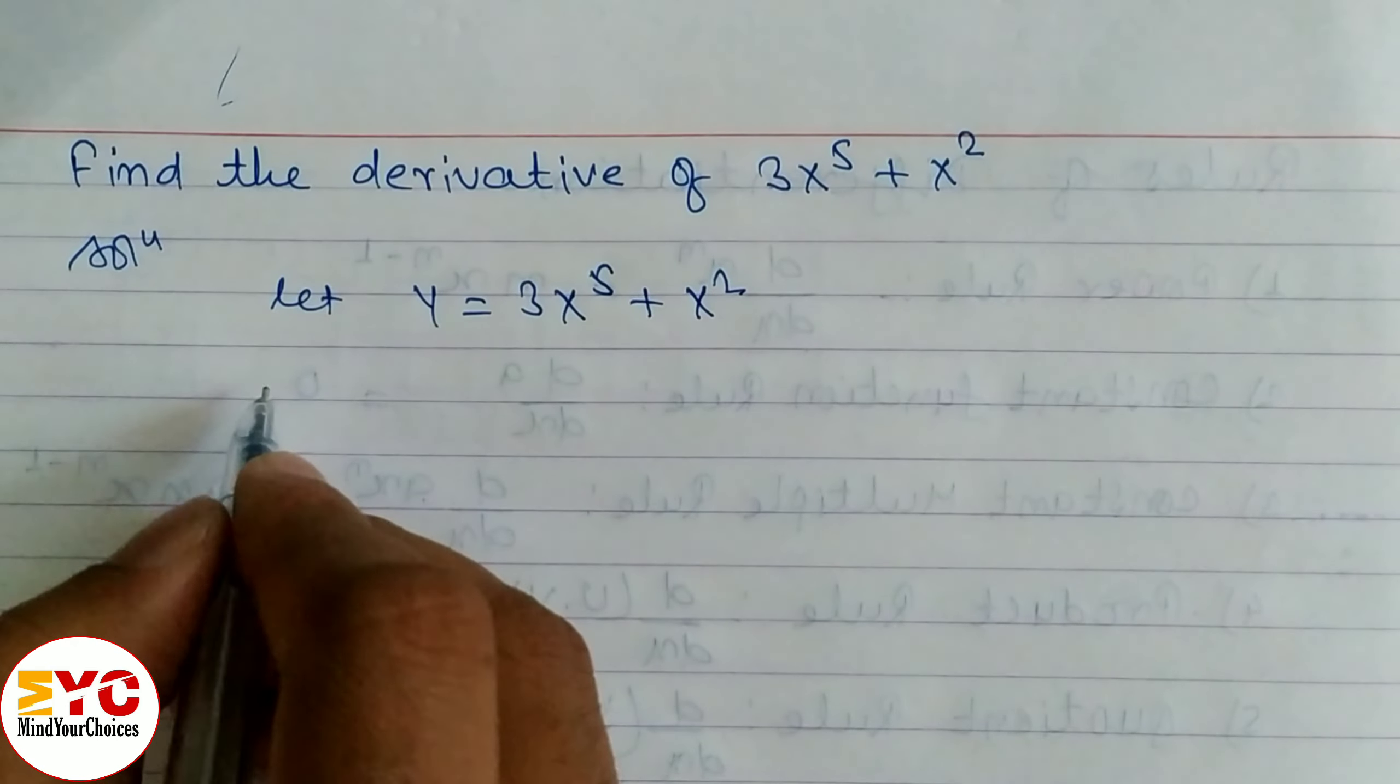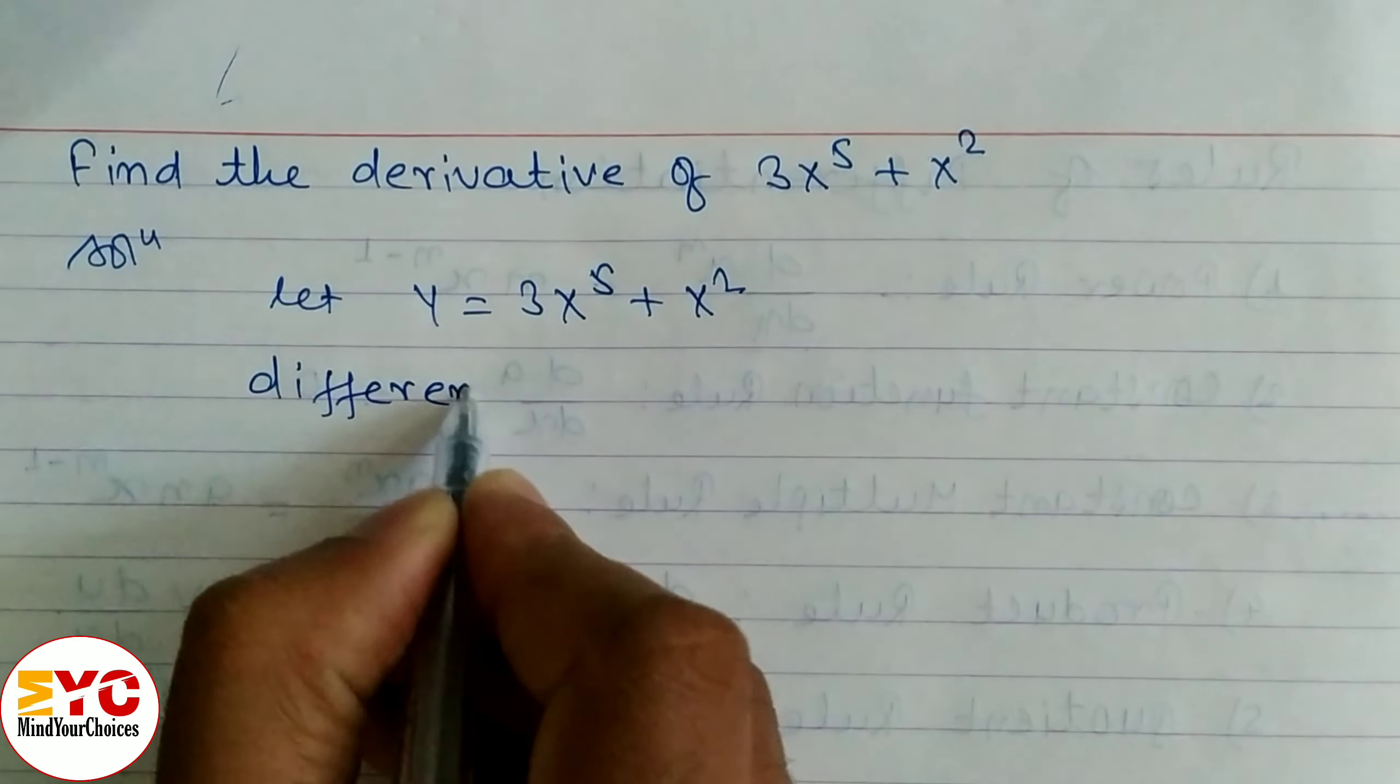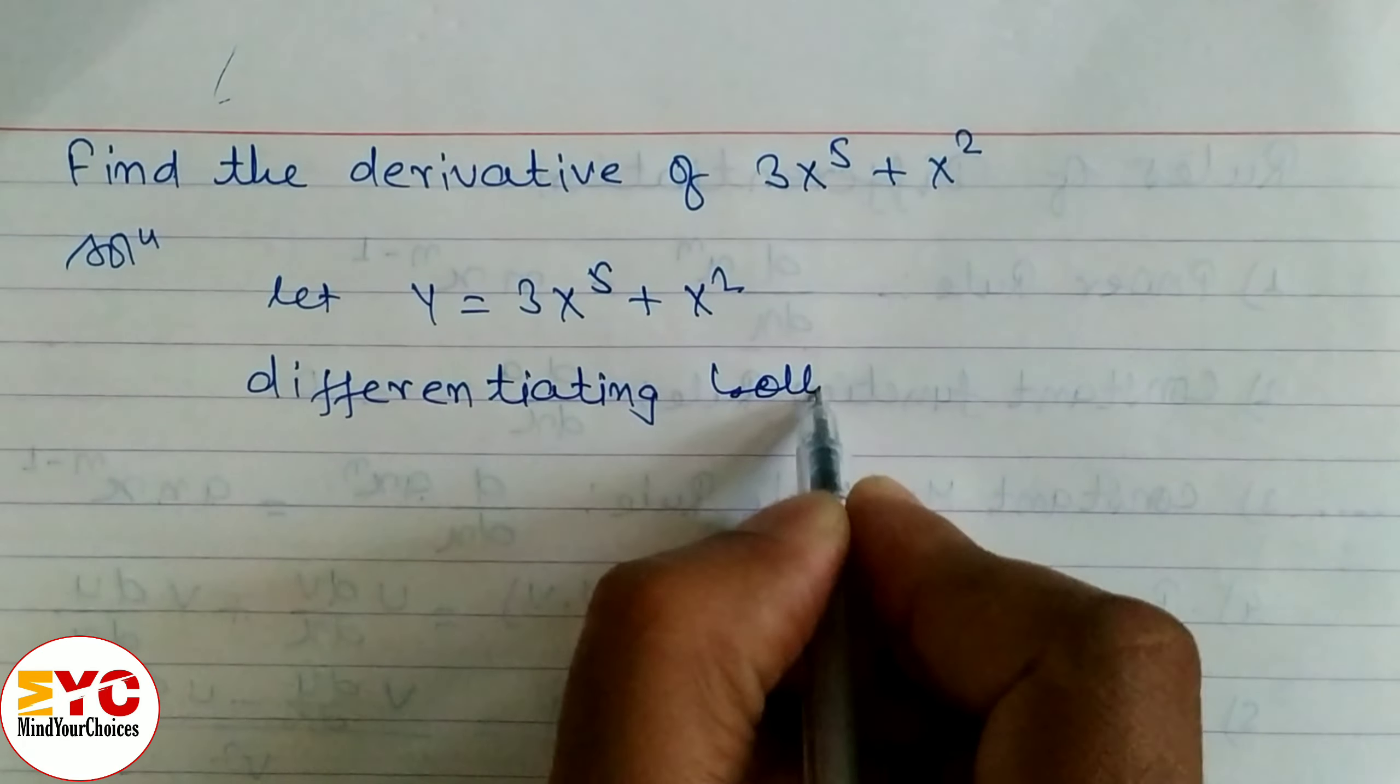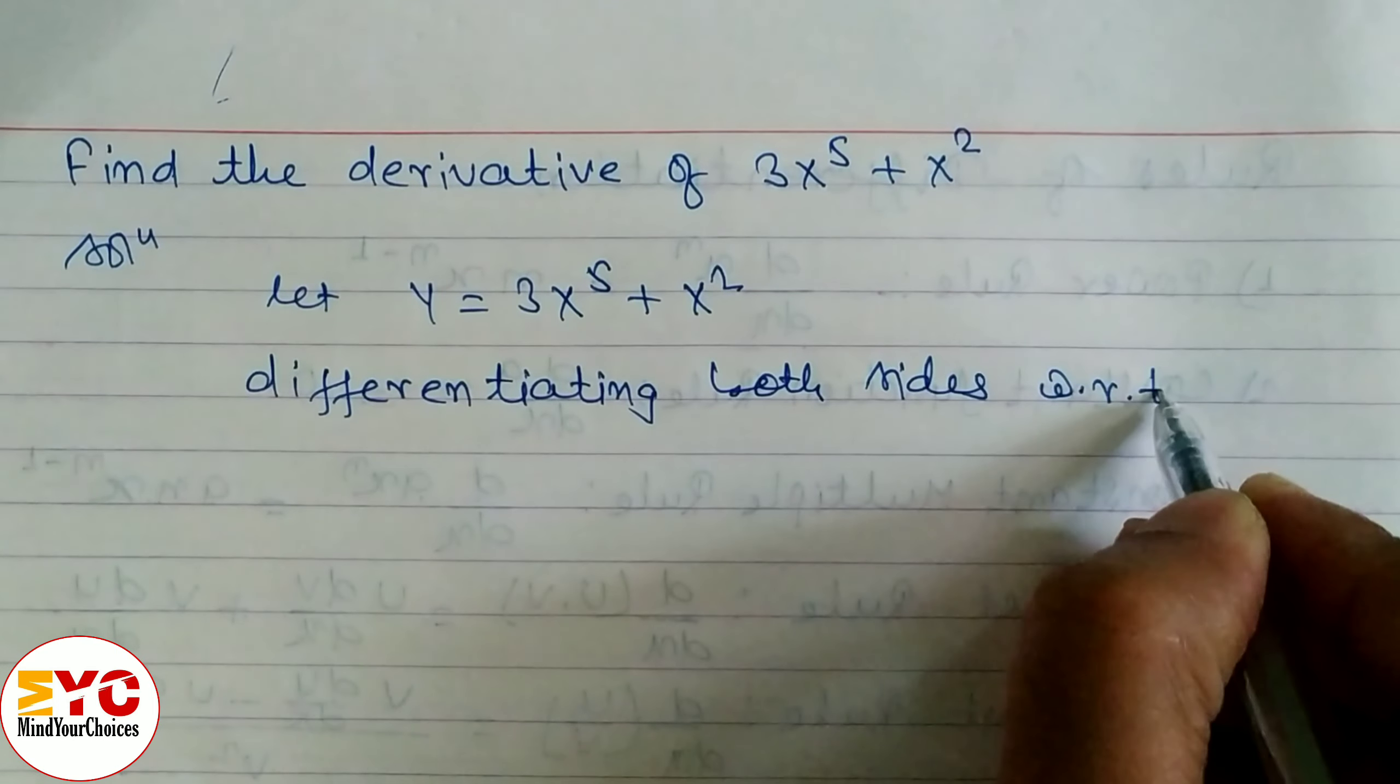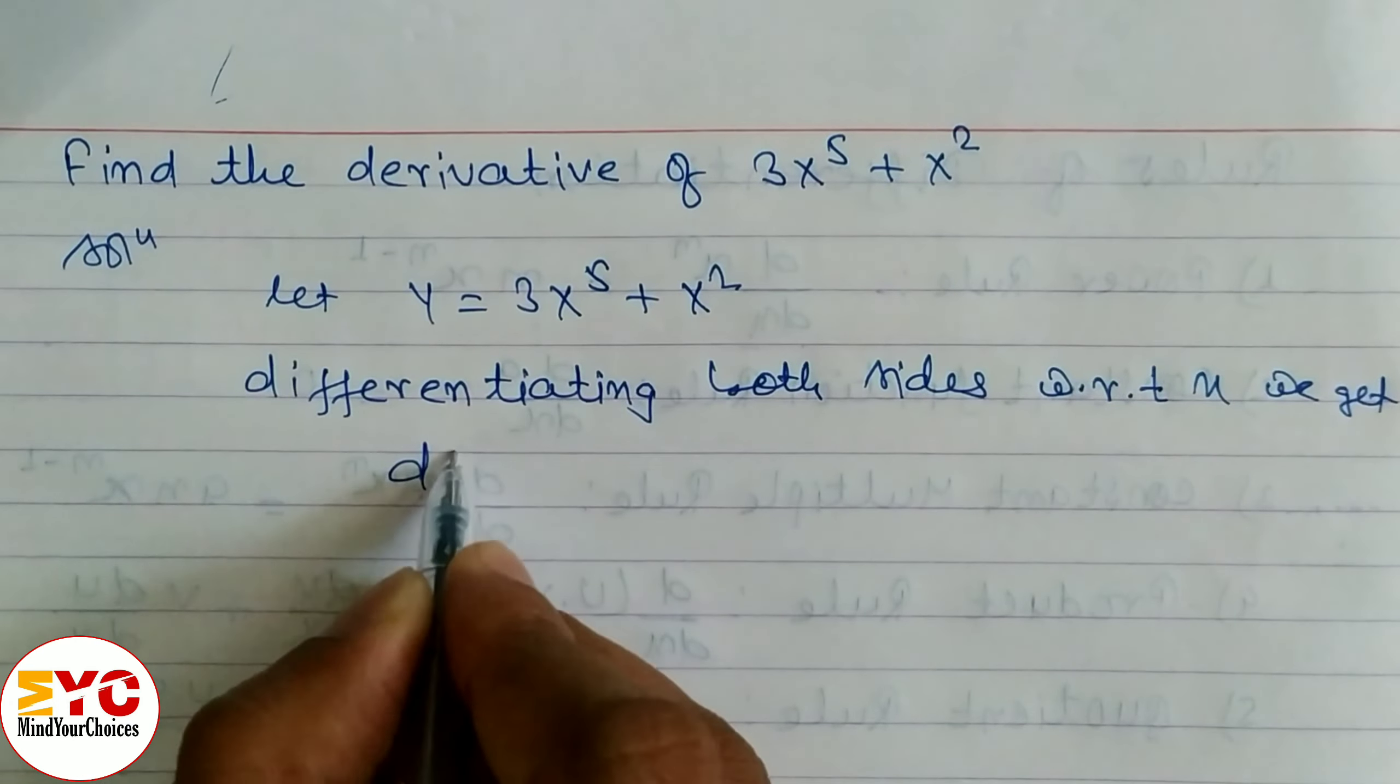So first of all we have to differentiating both sides with respect to x. So let's write on differentiating both sides with respect to x. We get, let's differentiate this dy by dx is